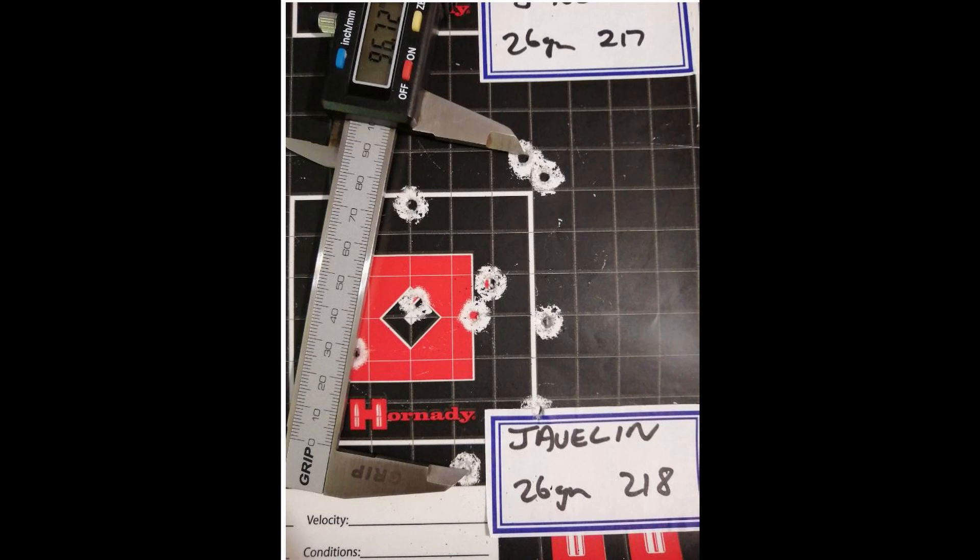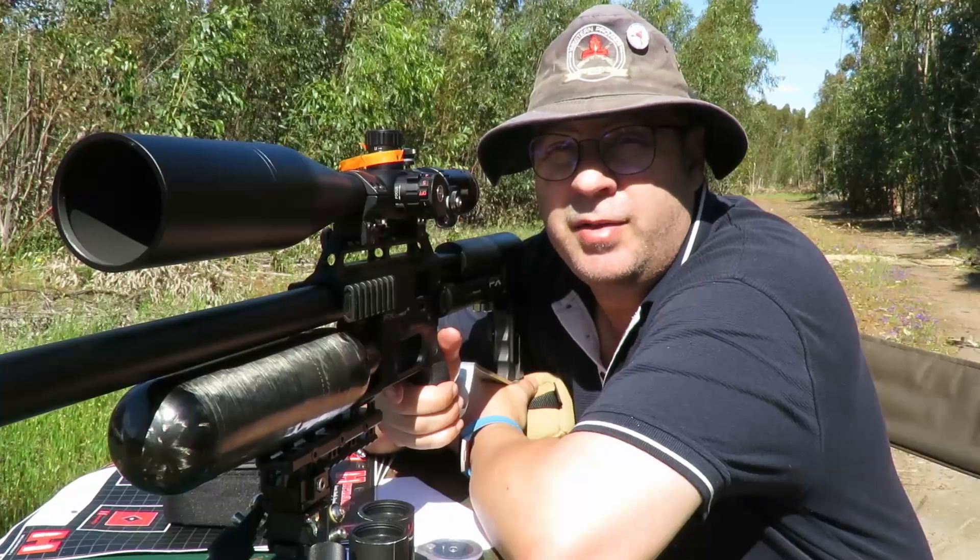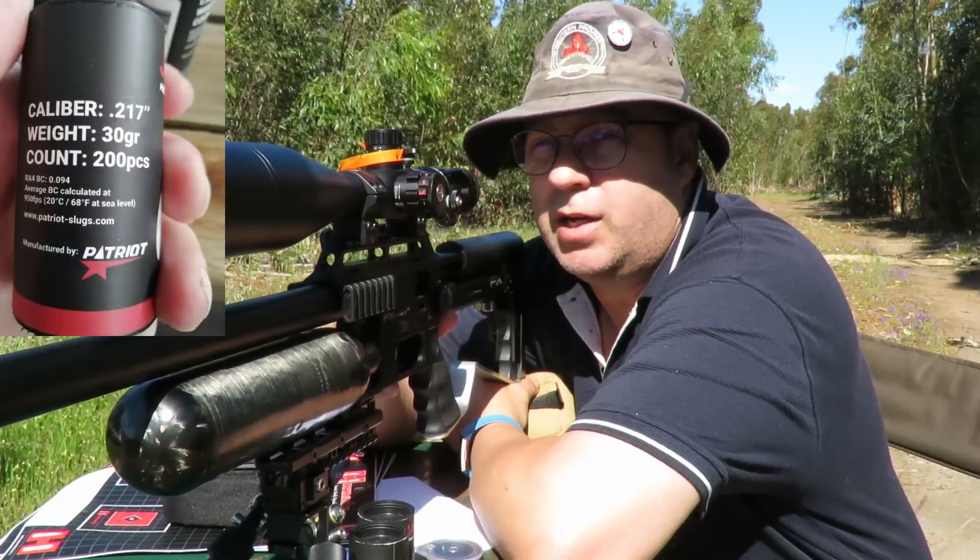Let's go for it. Right, 30 grainers, they're running a bit slow at 930 feet a second, but let's give it a go in any case.